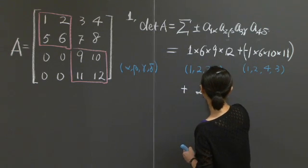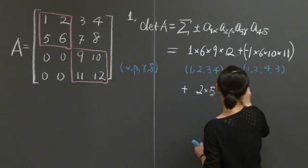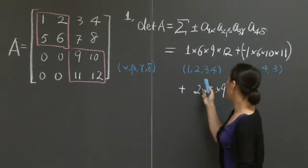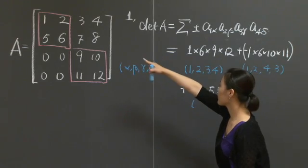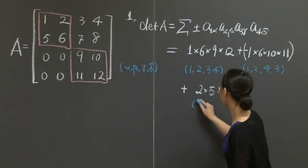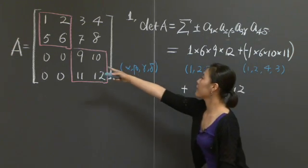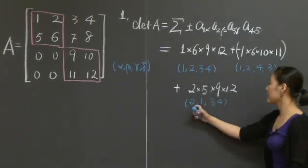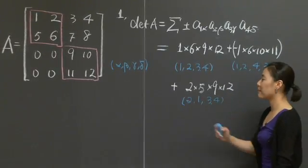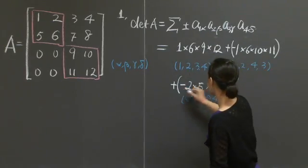Next term, I've exhausted the first possibility of choosing 1-6, right? So let's look at 2, 5. 2 times 5 times 9 times 12. What are the column numbers? 2 comes from 1, 2 entry, so I have a 2 in the front. 5 is 2, 1 entry, so 2, 1, and then 3, 4. Again, I need one exchange to get back to 1, 2, 3, 4, which means I have a negative sign in the front.